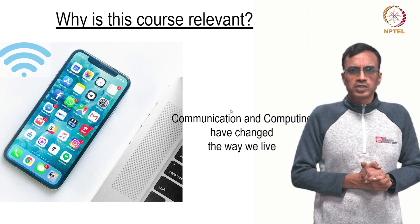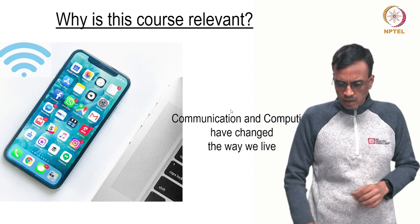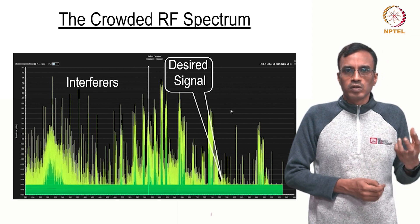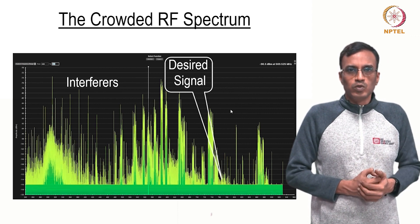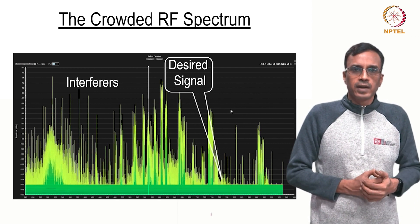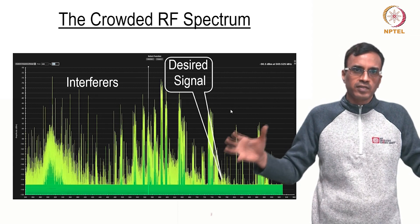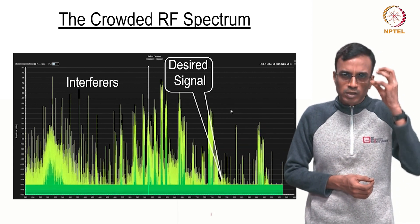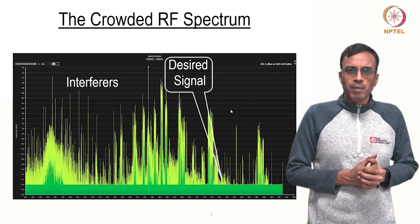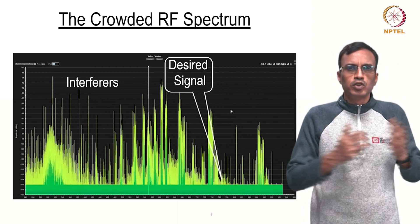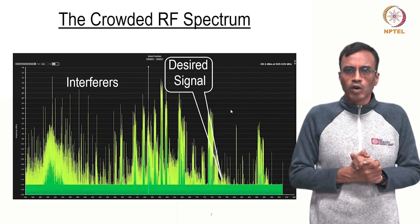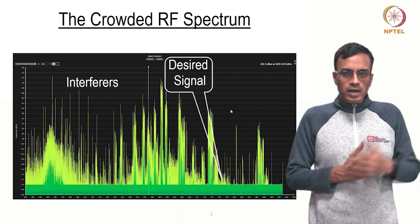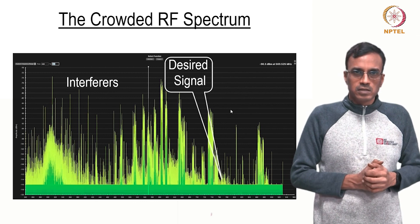The radio does something which is magical. If you look at the RF spectrum, the desired signal that you want to receive is very, very small compared to a whole bunch of interferers that are out there. And your phone magically picks out that small signal from amidst this huge amount of interfering noise, so that you are able to carry on a conversation, download data, all at blazing speeds.